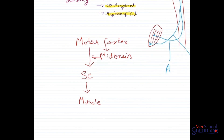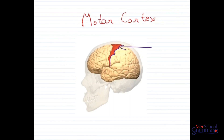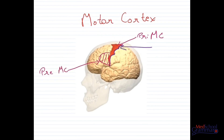Now let us look at the motor cortex in detail, because it gives origin to the Descending Tracks. This diagram shows the motor cortex with an orientation of the superolateral side of the brain. To understand any diagram, we need a reference point — here it is the central sulcus, marked in purple. The area anterior to the central sulcus, shown in red, is the primary motor cortex. The area even more anterior to the primary motor cortex is called the premotor cortex. And the area superior to the premotor cortex is called the supplementary motor cortex.